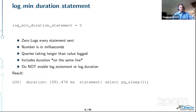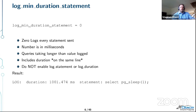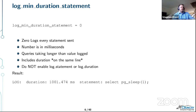The first parameter is log_min_duration_statement. Postgres has different ways of logging statements. I don't recommend using log_statement or log_duration because PG Badger isn't able to easily combine those — the statement and log information end up on two different rows. That's why log_min_duration_statement was invented: it puts the duration and the actual statement on the same line in the log file. Note that the number here is in milliseconds.